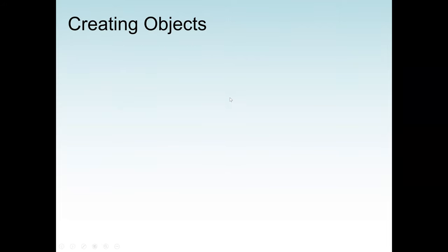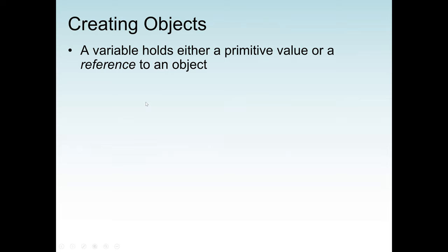The first topic is creating objects. A variable holds either a primitive value or a reference to an object. Java primitive data types include integer, double, float, character, and boolean. With a primitive data type, when we declare a variable as int, we don't have a built-in method to manipulate that value — if we want to do any operation, we have to write a method ourselves. But with reference types or objects, such as String, which is not a primitive type, it is a class.